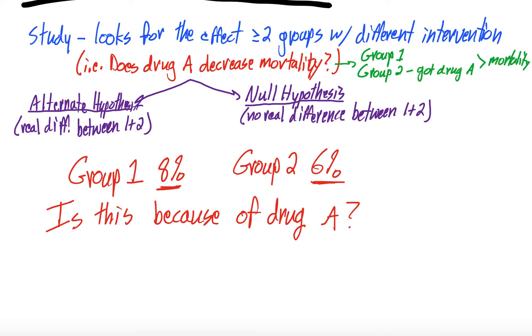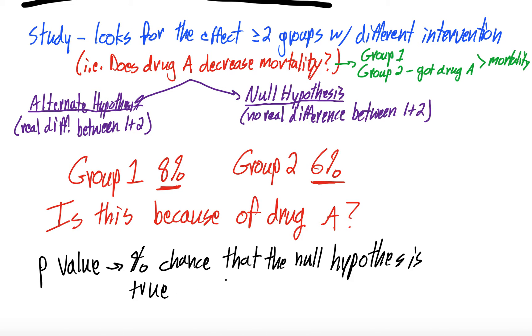So the null hypothesis comes in because the p-value tells you the percent chance that the null hypothesis is true and that this difference is just simply chance.